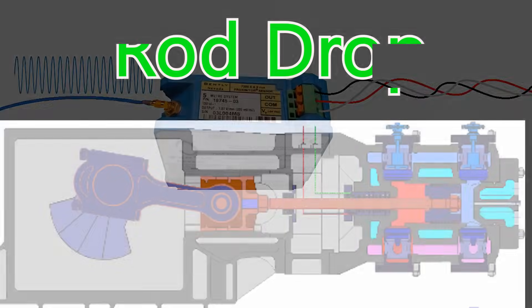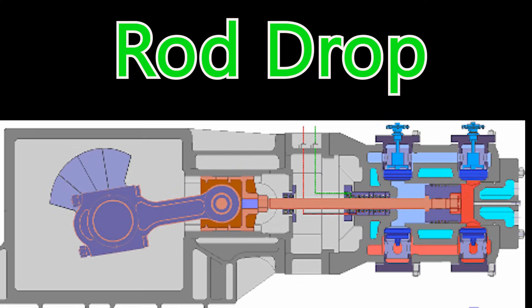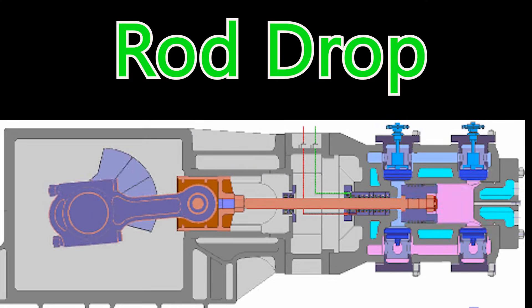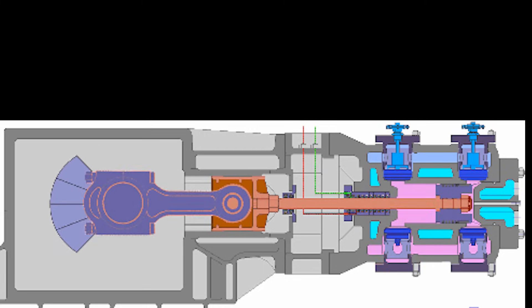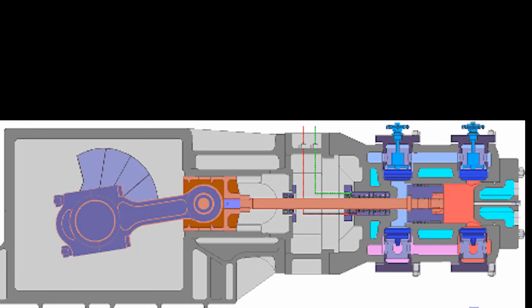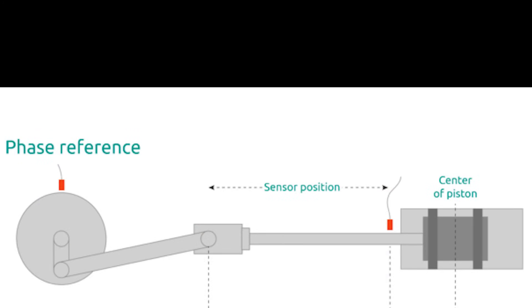Proximity probes can also be used on reciprocating compressors to track the amount of band wear that occurs as a piston slides in and out of the cylinder. These types of devices are typically referred to as rod drop sensors. In this application, a proximity probe is installed perpendicular to the shaft, either above or below.